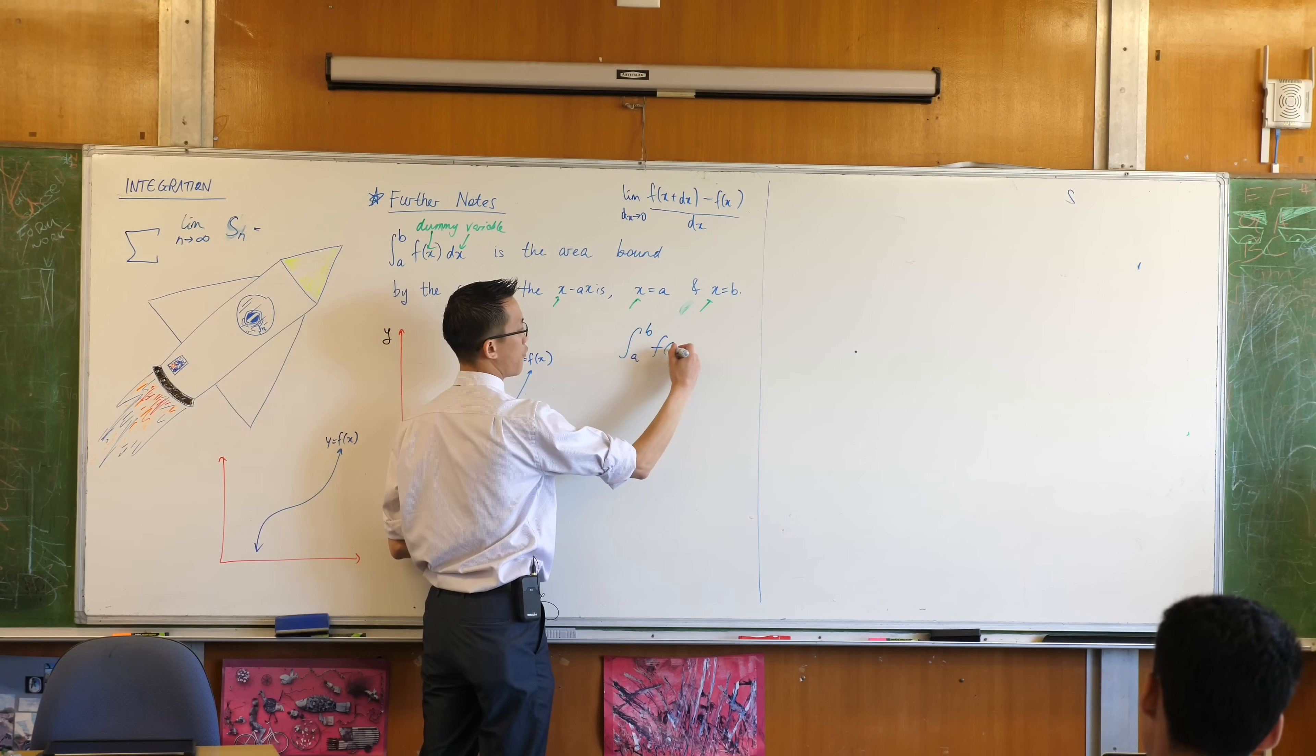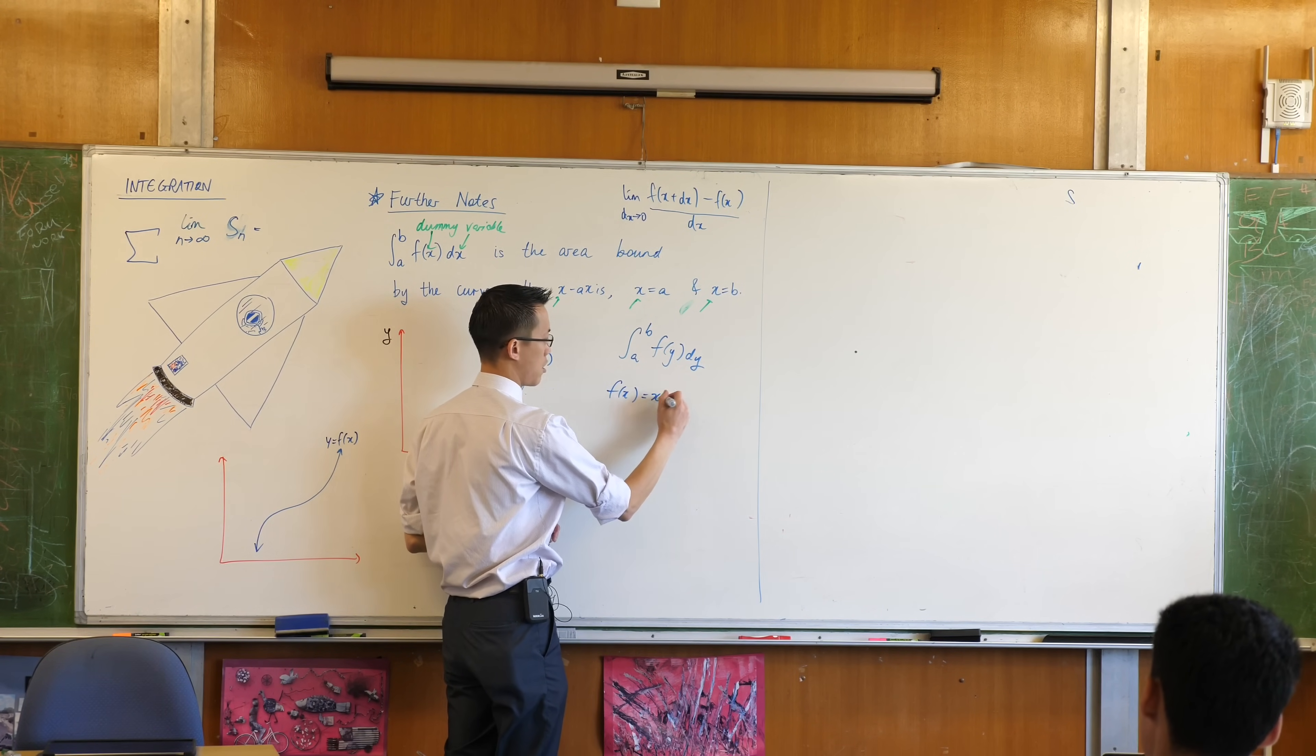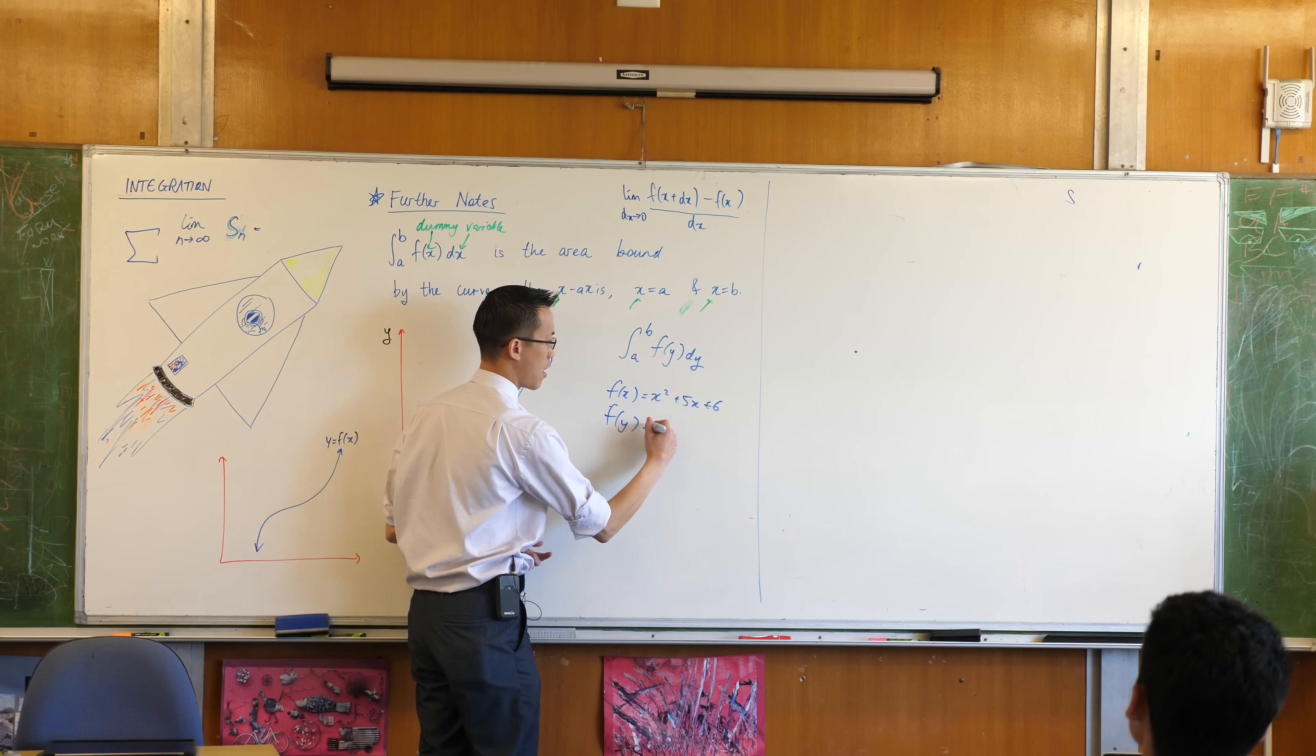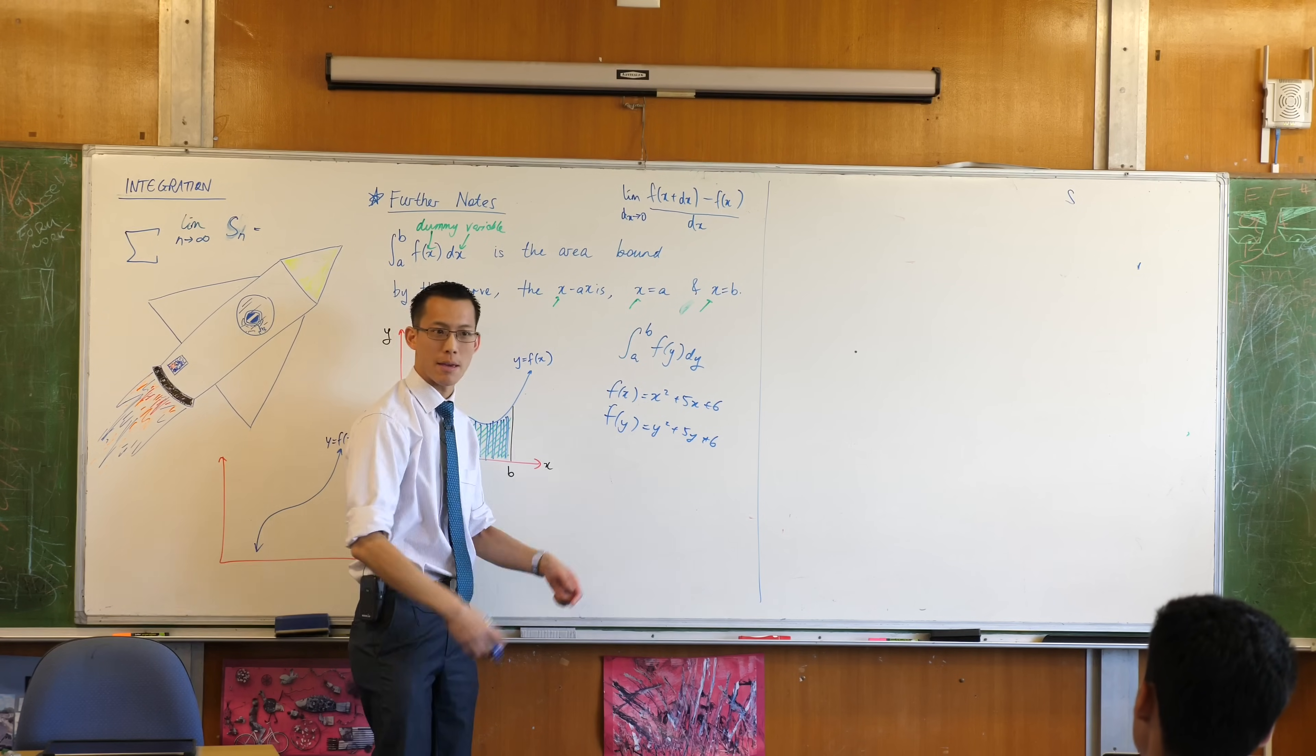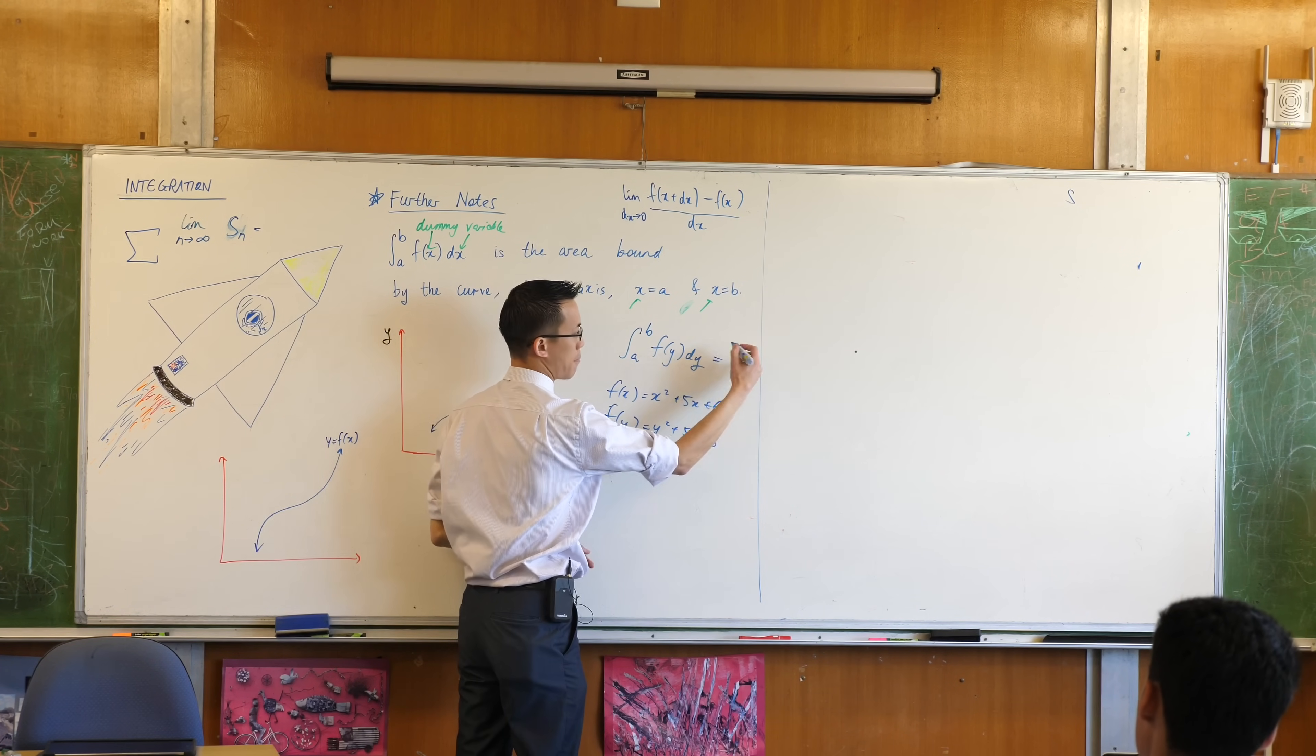So it's a dummy variable, which means I could just as easily have written, for example, a, b, f of y, dy. If this is the same function, say, f of x was some completely randomly selected function, then f of y would be the same thing, just with y's instead of x's. And so when you put some numbers into this, you'll get the same thing out. The results will be the same.